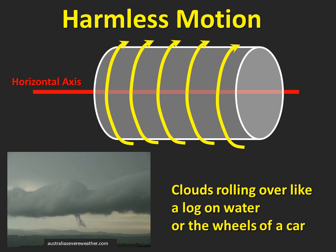Most of the time, the cloud motion you see is not rotation. It's very common to see clouds that appear to be moving around a horizontal axis, in the same way that the wheels on your car roll along the highway. This happens quite often with shelf clouds and in the downdraft outflow part of the storm, where air is coming down and blowing out away from the storm. Spotters should not refer to this kind of cloud motion as rotation.